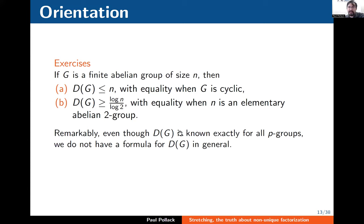Something remarkable: you might think it wouldn't be hard to write down a formula for D(G) in terms of structural invariants of G. Every finite abelian group is a direct sum of cyclic groups, so there should be a formula in terms of invariant factors. But no one knows such a formula. There was an old conjecture about what it might be, and the greatest progress we have now is knowing there are infinitely many counterexamples to that formula — we don't even have a conjecture for a correct formula.